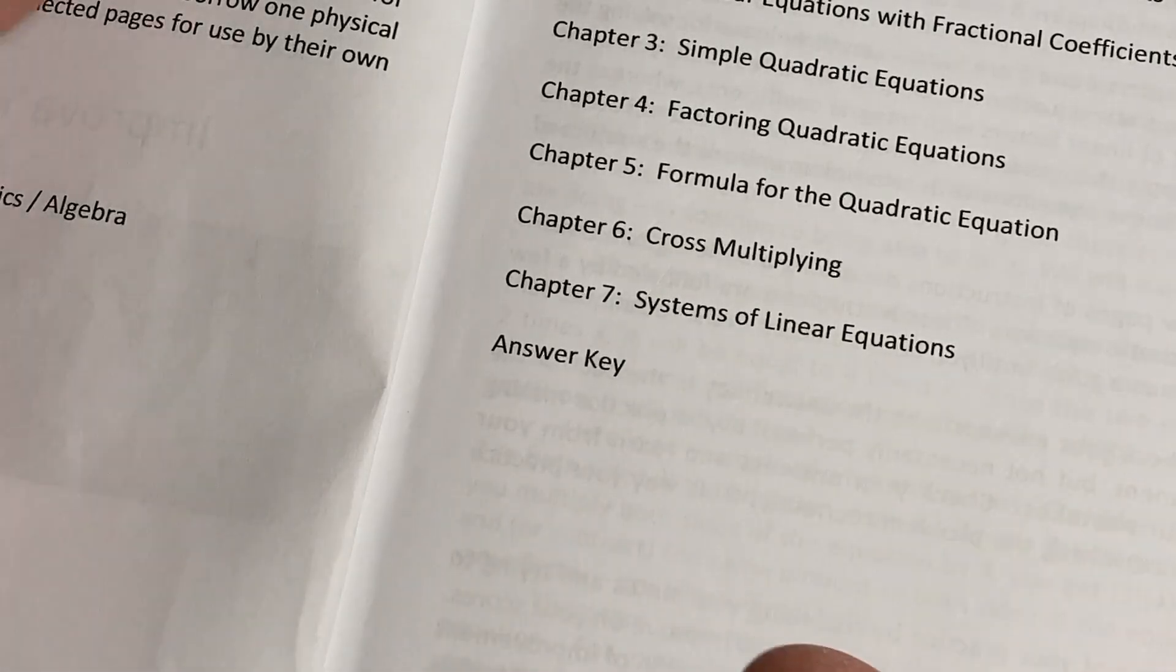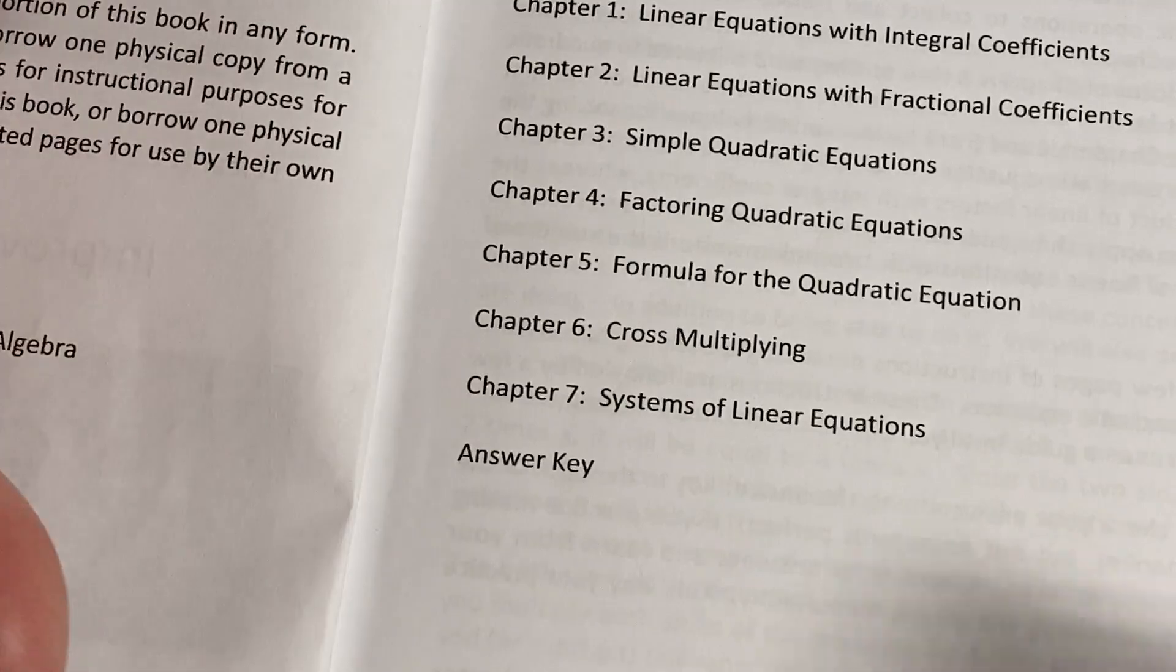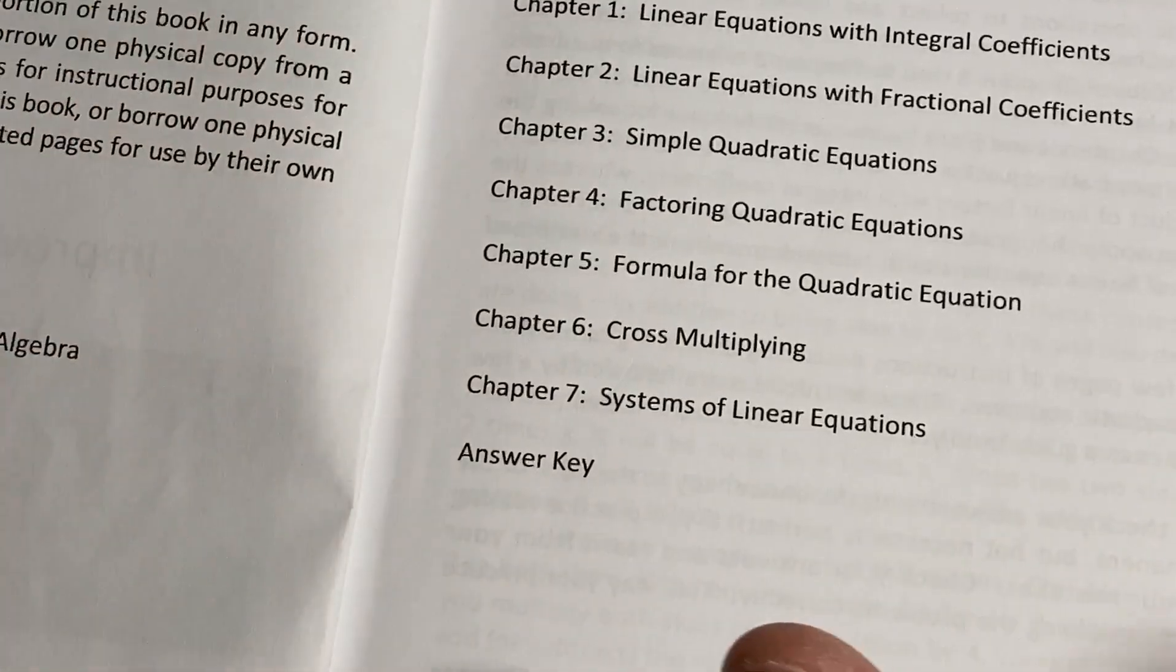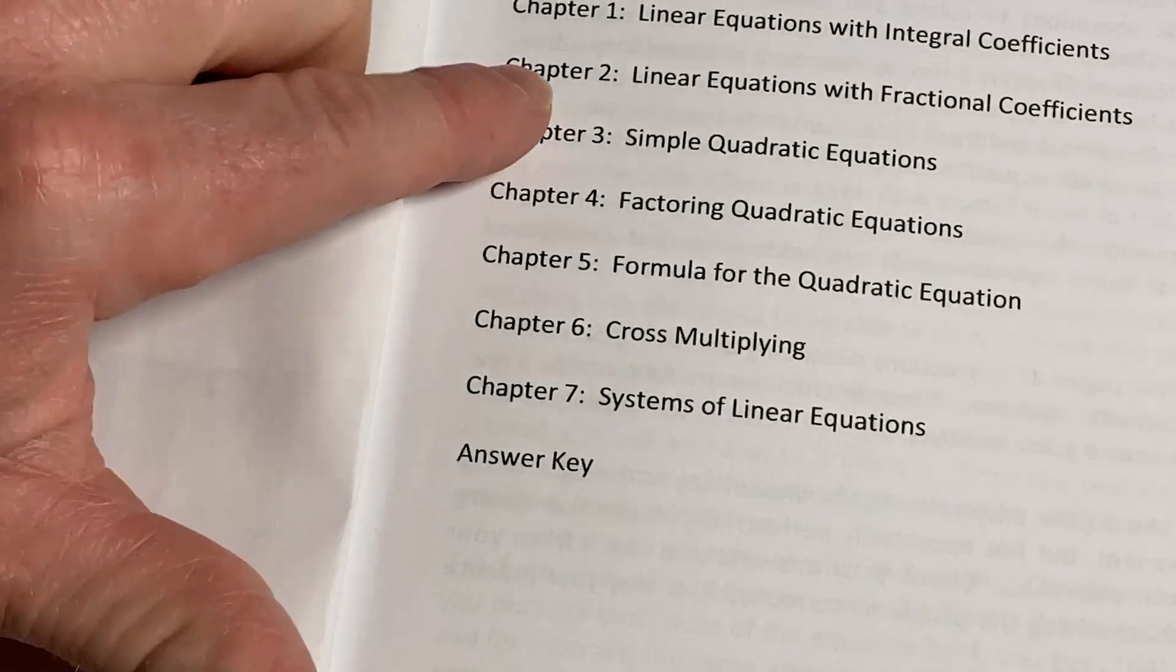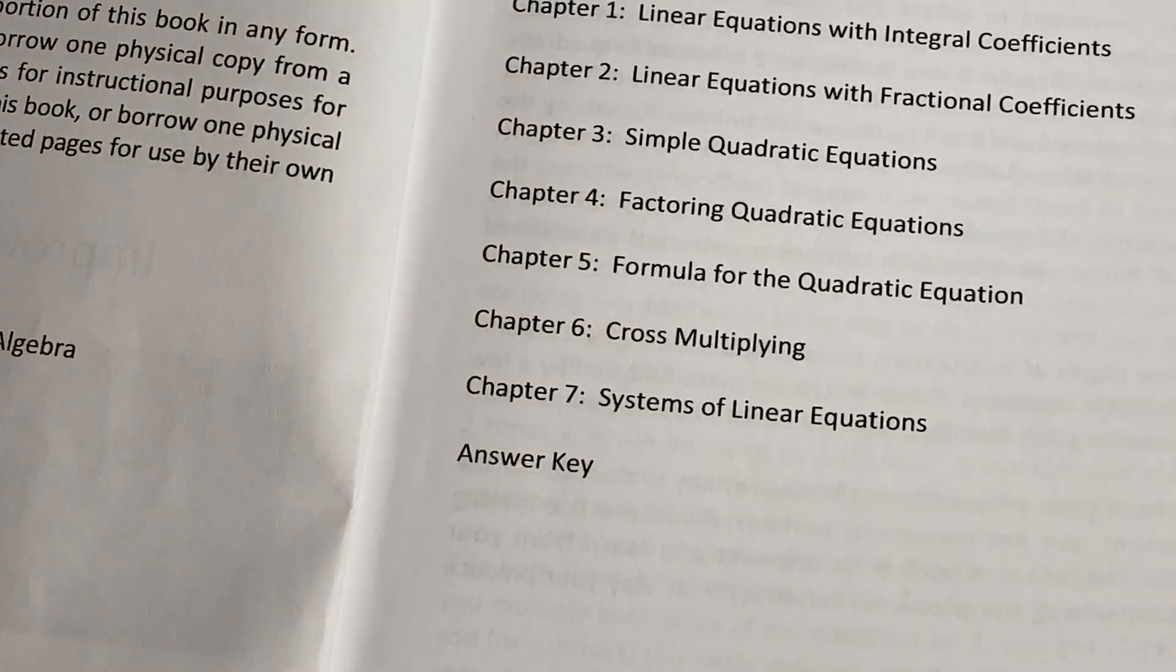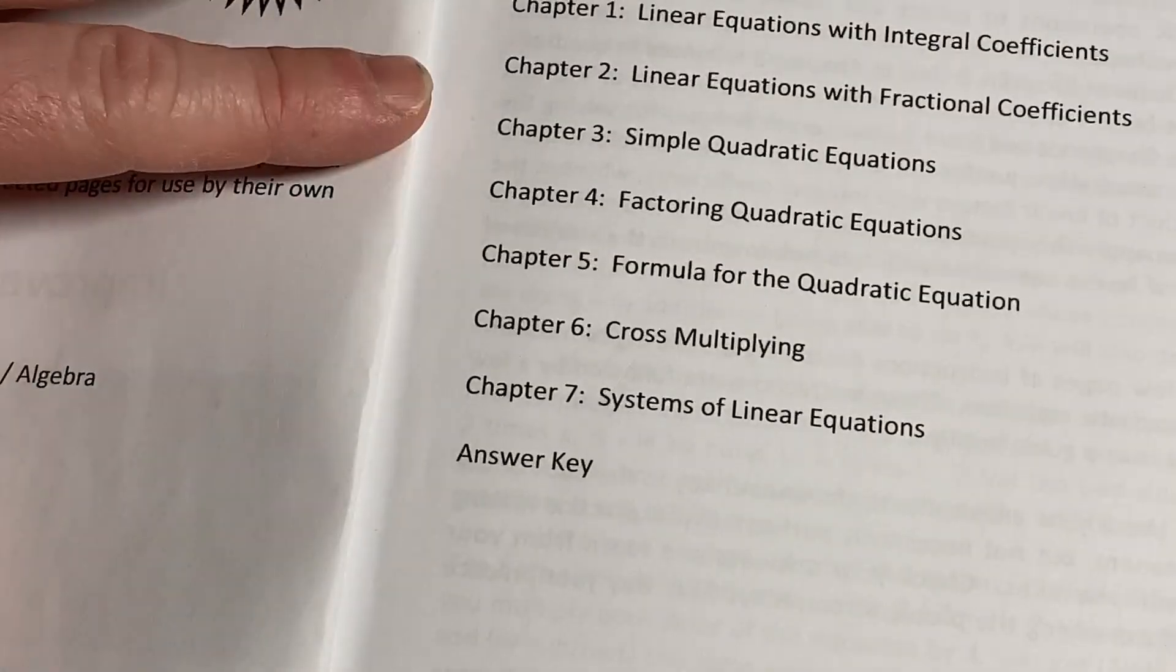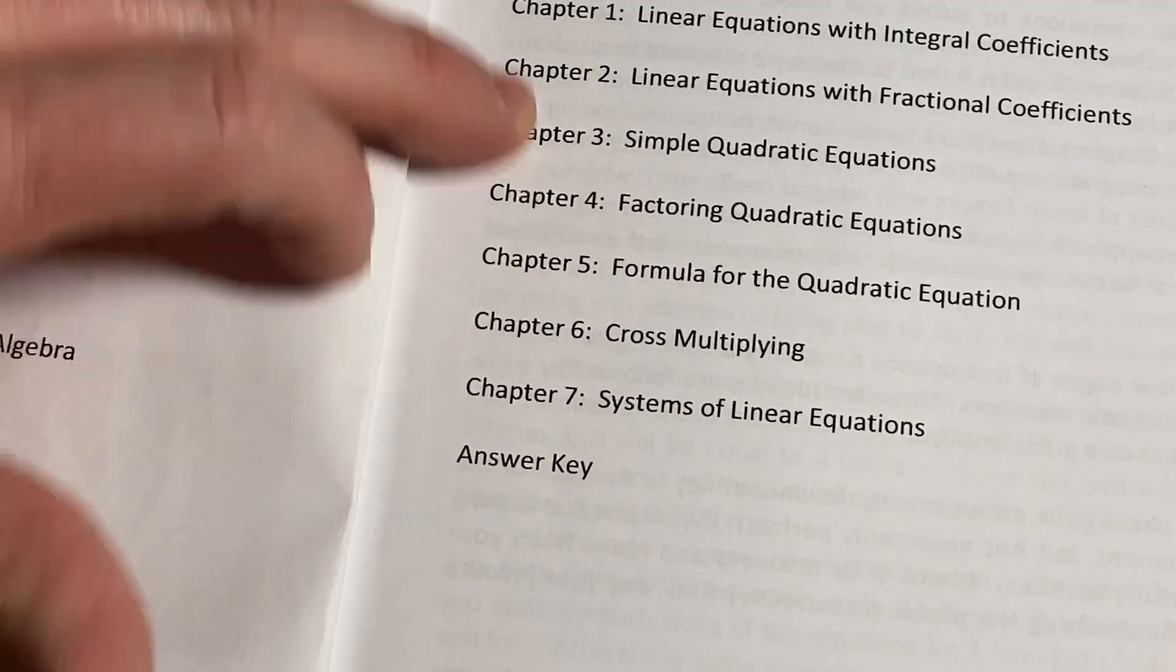So this goes extremely slow in the sense that you have entire chapters dedicated to very simple things. Whereas in a textbook a lot of these things would be just in one chapter. For example all the quadratic stuff might be in just a simple chapter in a college algebra book, where here he separates it into three chapters.